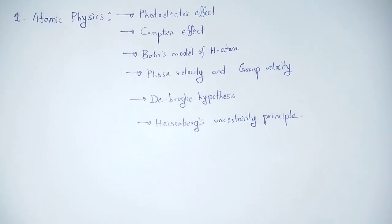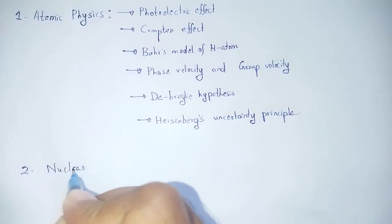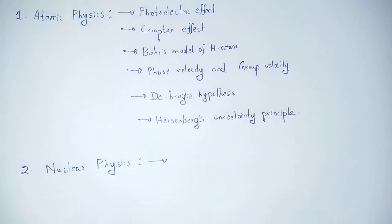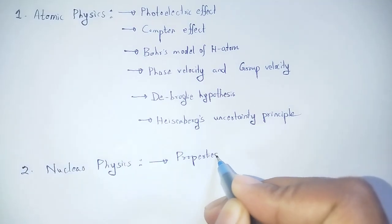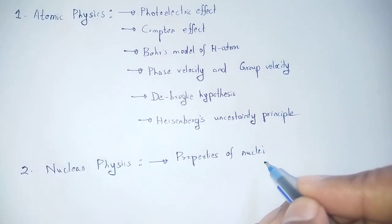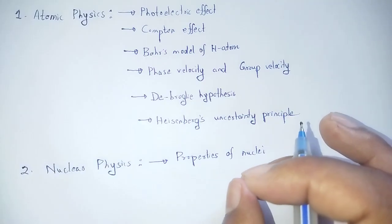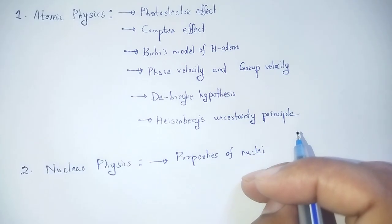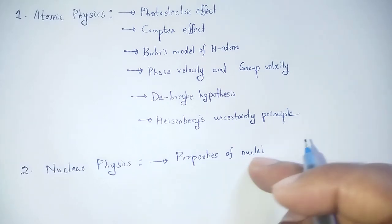Moving on to Nuclear Physics. The important topics under Nuclear Physics include: Properties of the Nucleus — covering nucleus size, structure, constituent particles (electron, proton, neutron), basic features like Spin, Parity, and Electric Quadrupole Moment — which tells us whether the nuclear shape is spherical, oblate, or a spheroid.